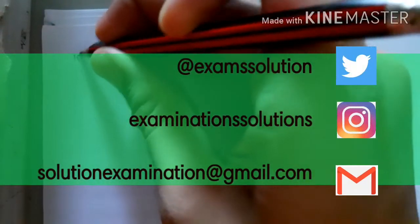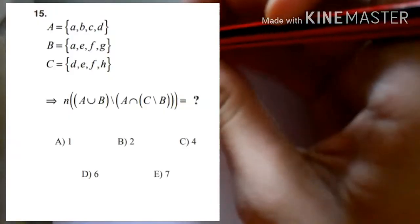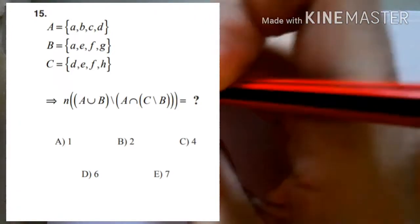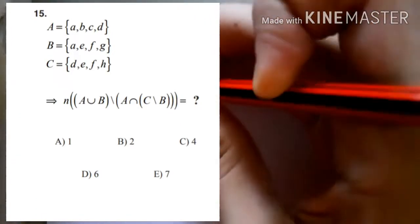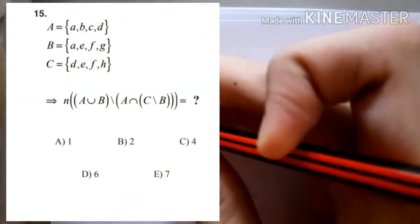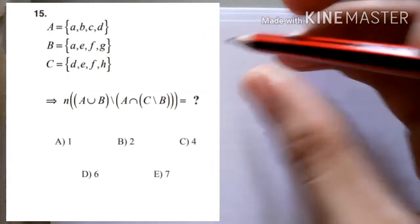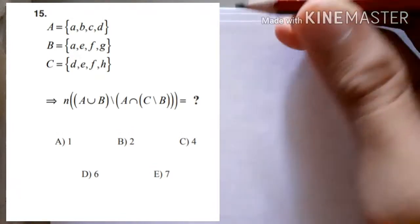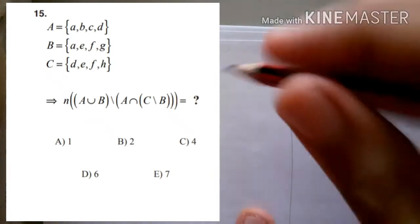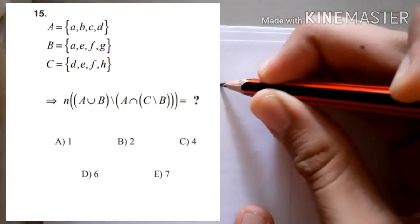For number 15, set A has elements {a, b, c, d}, set B has elements {a, e, f, g}, and set C has elements {d, e, f, h}. The question asks about the number of elements present in A∪B intersected with the complement of C relative to B.